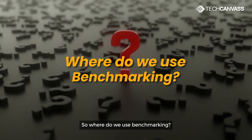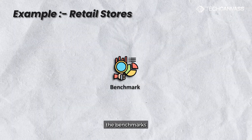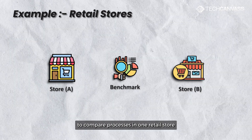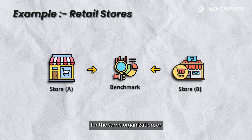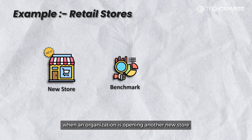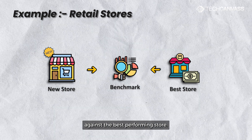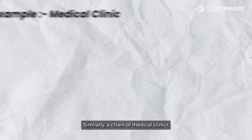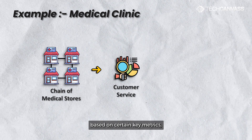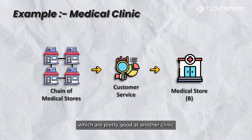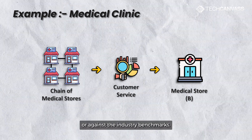So where do we use benchmarking? Benchmarking can be used in a variety of situations. For example, benchmarks could be used to compare processes in one retail store with those in another store for the same organization, or when an organization is opening a new store and it can benchmark it against the best performing store. Similarly, a chain of medical clinics might measure its customer service based on certain key metrics against another clinic or against the industry benchmarks.